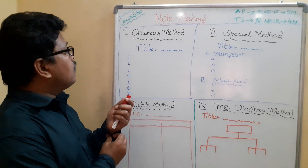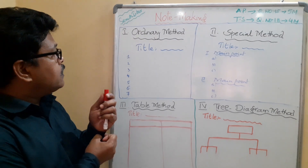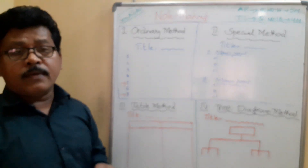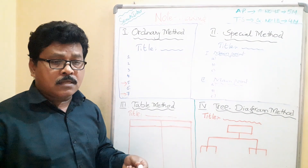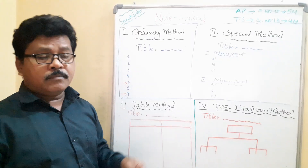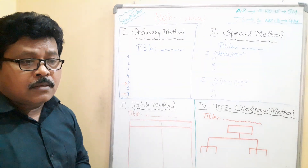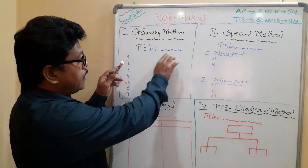The first one is the ordinary method. When you are given the passage, first read it and take out the important points. You must write a minimum of five and a maximum of seven points. Write a title based on what the passage is about — whether it is about discipline, television, mobile phones, online classes, or computers.